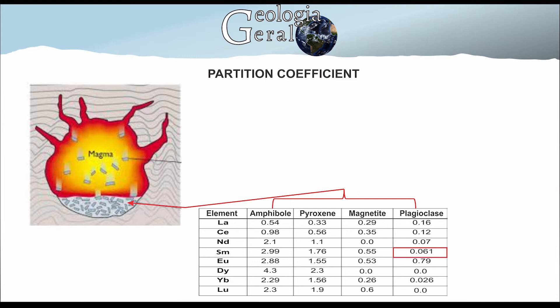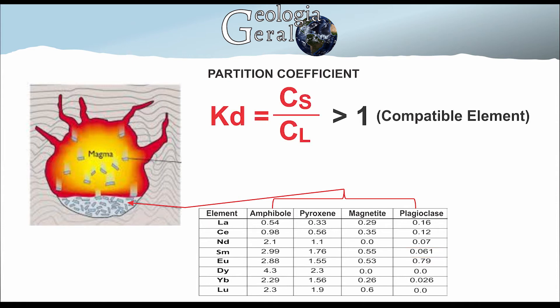In geological studies, we determine that an element is compatible with the mineral or rock if its KD value is greater than one. This means that, for the example mentioned, Ce is compatible with pyroxene and amphibol, and incompatible with magnetite and plagioclase.